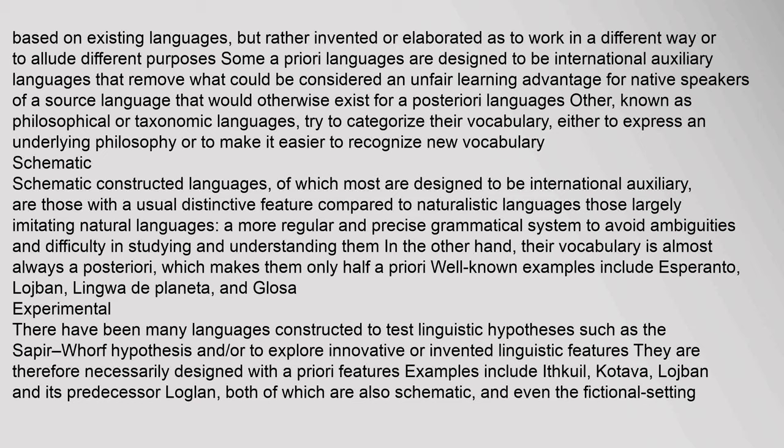Schematic constructed languages, most of which are designed to be international auxiliary languages, feature a more regular and precise grammatical system to avoid ambiguities. Their vocabulary is almost always a posteriori, making them only half a priori. Well-known examples include Esperanto, Lojban, Lingua de Planeta, and Glossa. Experimental languages are constructed to test linguistic hypotheses such as the Sapir-Whorf hypothesis or to explore innovative linguistic features; examples include Ithkuil, Kēlen, Lojban, and its predecessor Loglan.